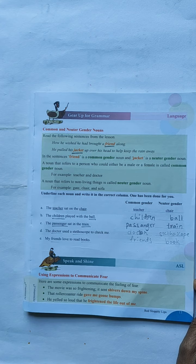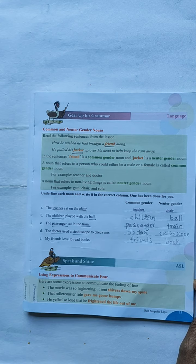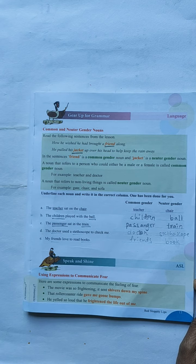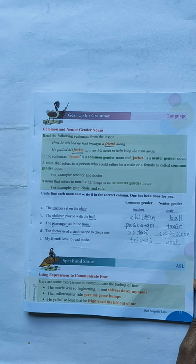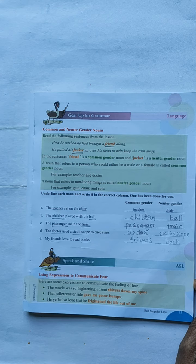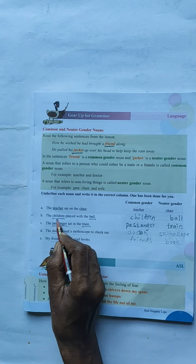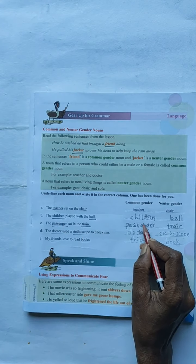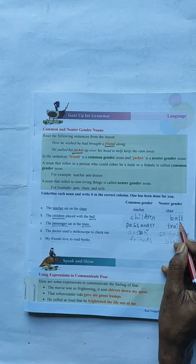I hope you all are understood common and nature gender noun. Next, we will go underline each noun and write it in the correct column. One has been done for you already. Common gender, nature gender. The first one's sentence, they have underlined two words and they have written in common gender and nature gender also. The second one we will go on. The children played with the ball. Here, children and ball. Children is a common. Ball is a nature. You have to write in this side children and here nature.